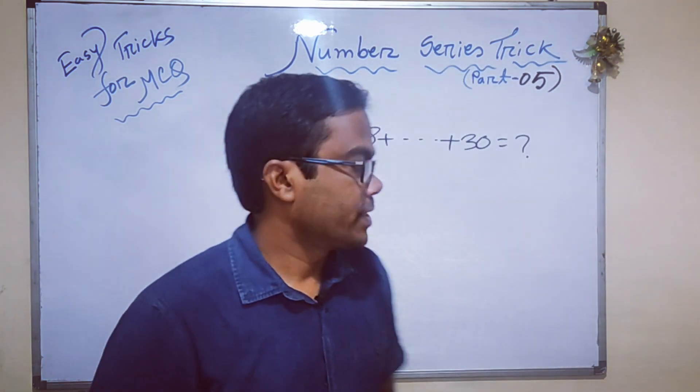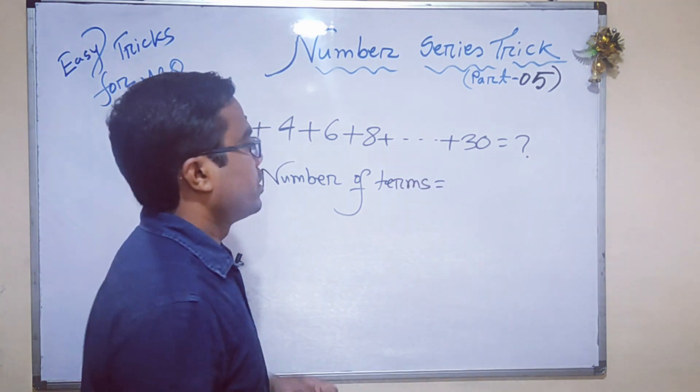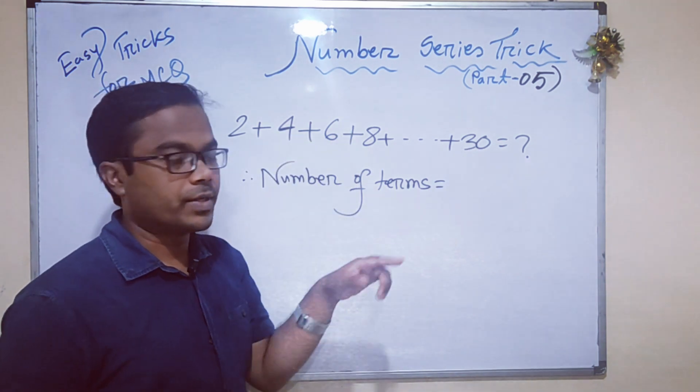So we can write number of terms with the formula: last term minus first term, divide by 2, plus 1.